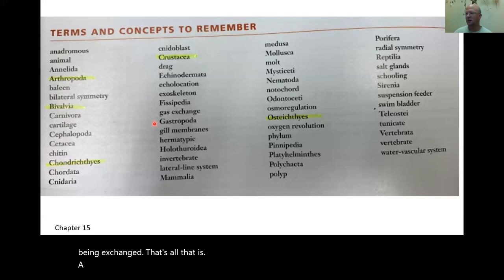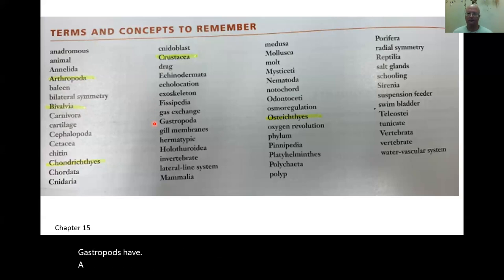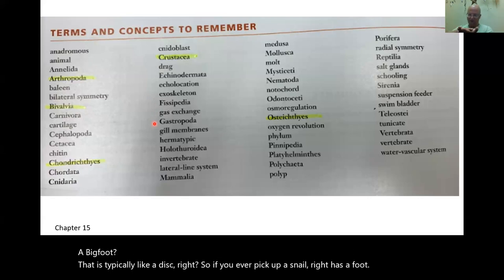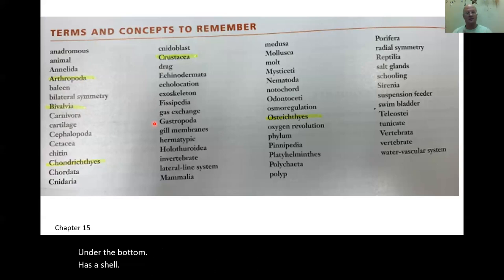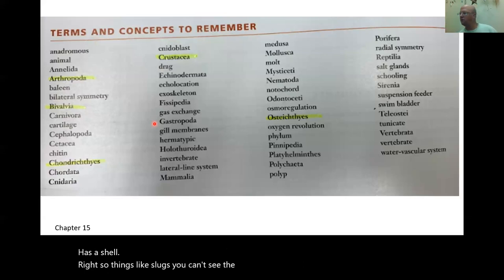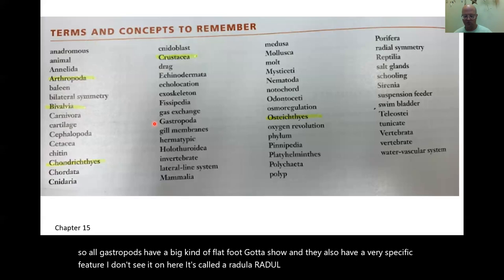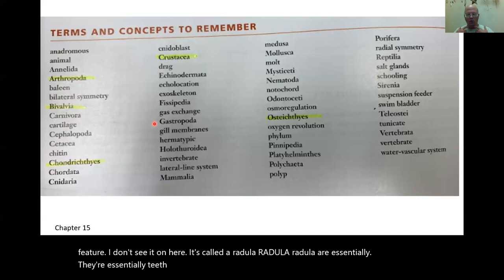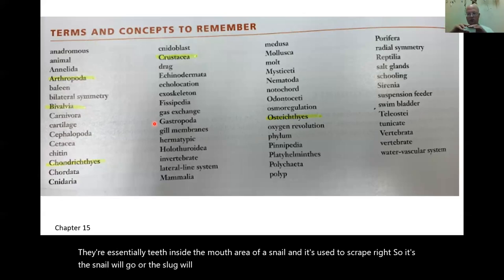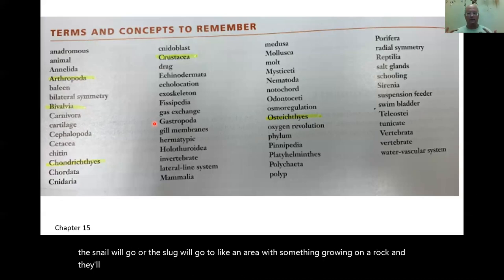Gastropoda — snails and slugs. Gastropods have a big foot that is typically like a disc. If you ever pick up a snail, it has a foot on the bottom and a shell. Slugs have a shell too — it's inside their body. All gastropods have a flat foot, a shell, and a specific feature called a radula (R-A-D-U-L-A) — essentially teeth in the mouth used to scrape food off rocks.